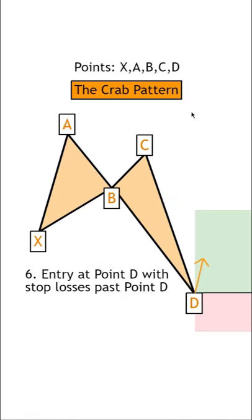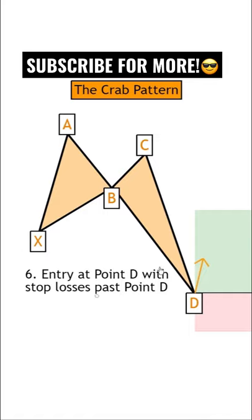Those are all the points for the crab pattern, which is usually known for having this overextended leg, and the entries are usually at point D, with stop losses past point D.